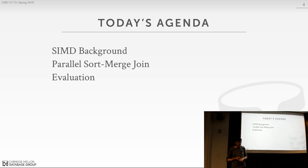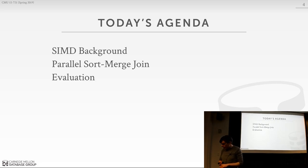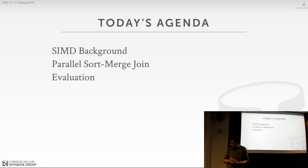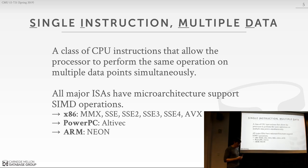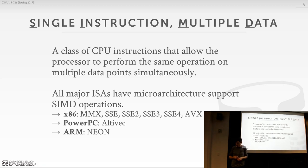SIMD stands for Single Instruction, Multiple Data — this comes from Flynn's taxonomy. We'll cover SIMD in more detail next week when we talk about vectorized execution. What I'm providing here is the basic background you need to understand how we're going to do sorting quickly on modern hardware. The way SIMD works is that it's a category of CPU instructions that allows the CPU to perform the same operation on multiple data items at the same time, within the same instruction.